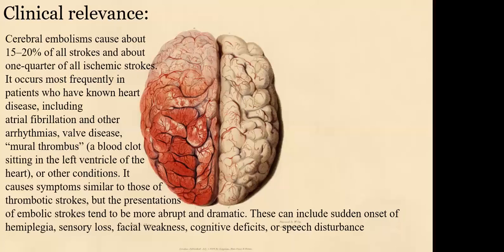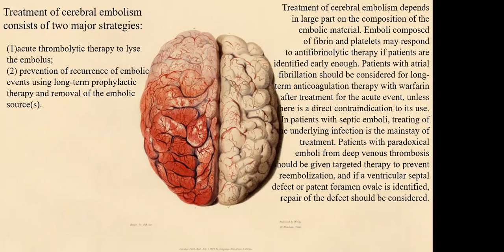Cerebral embolism causes symptoms similar to thrombotic strokes, but embolic strokes tend to be more abrupt and dramatic. While thrombotic strokes develop over time, embolic strokes occur abruptly and instantly. These can include sudden onset of hemiplegia, sensory loss, facial weakness, cognitive deficits, or speech disturbances depending on the location of the embolus.